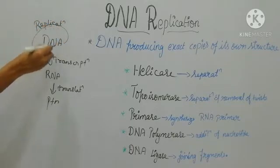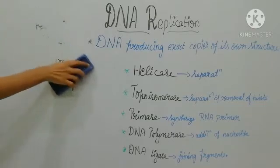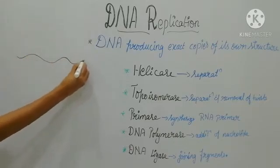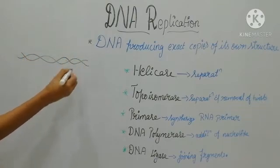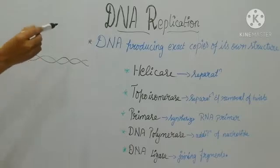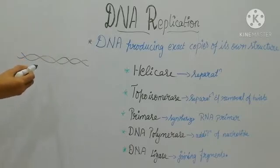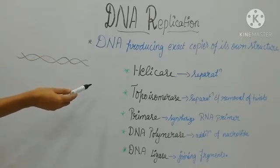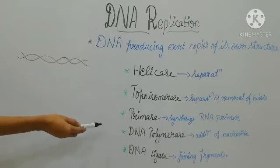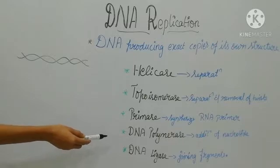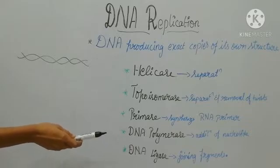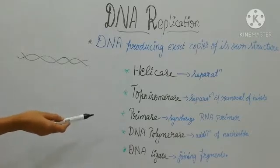Here we are going to see about the DNA replication process. We know that DNA is double stranded. First, we can see what enzymes are involved in this DNA replication process. There are 5 enzymes involved: helicase, topoisomerase, primase, DNA polymerase, and DNA ligase.